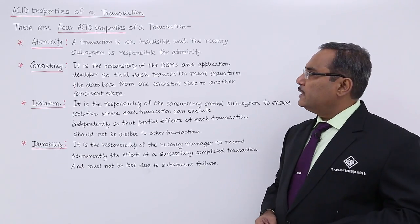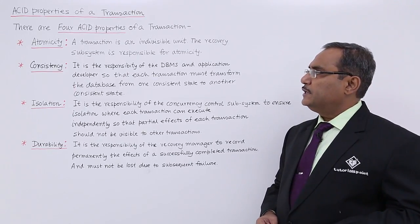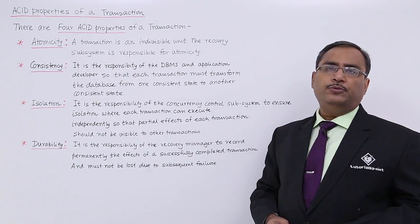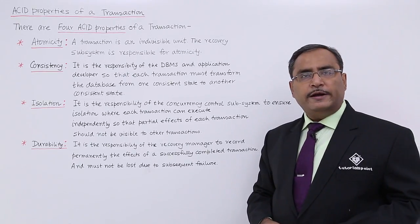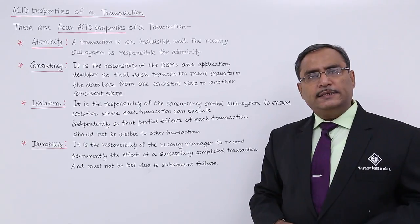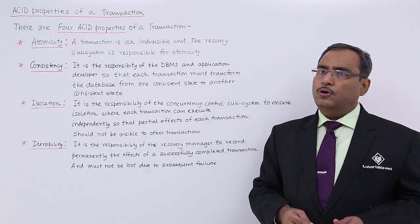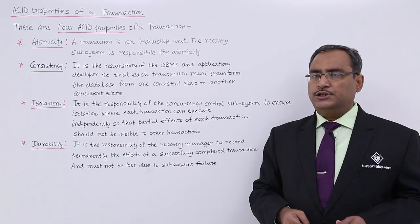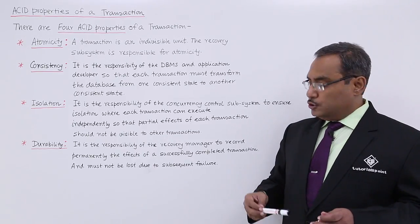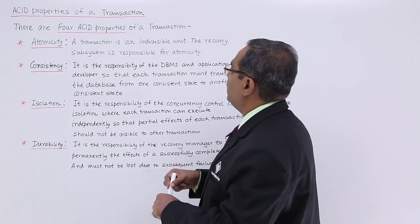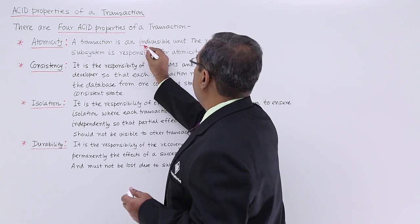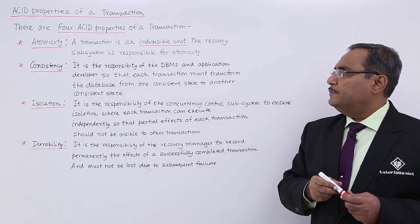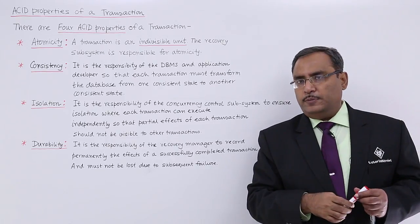The first one is known as atomicity. A transaction is an indivisible unit, that means it cannot be divided further. Either it will be executed in full or not at all. Partial execution of a transaction is not possible. That is why this term is very important — it is an indivisible unit. The recovery subsystem is responsible for atomicity.